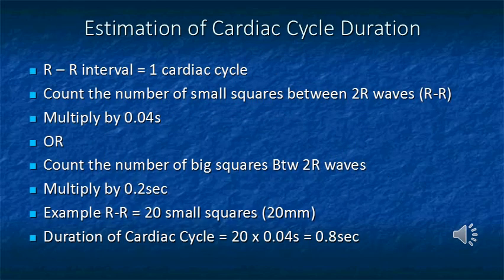This slide shows how to estimate the duration of a cardiac cycle by counting the number of small boxes between two R waves and multiplying by 0.04 seconds.